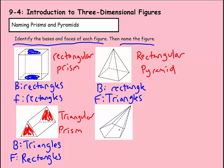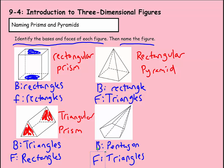This last one has only one base because all the points meet at a vertex, making it a pyramid. The base is a five-sided figure making it a pentagon, so the base is a pentagon. Since it's a pyramid, the faces are going to be triangles. We'll call this figure a pentagonal pyramid.